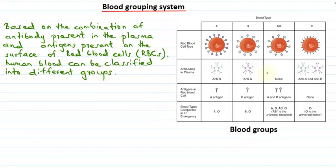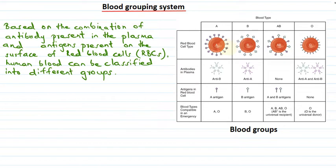Here we can see different blood types, that is different blood groups. We call this the ABO grouping system of blood because there are four types: A blood group, B blood group, AB blood group, and O blood group. These different groups are made on the basis of the combination of the antibody present in plasma and the antigens that are present on the surface of red blood cells.